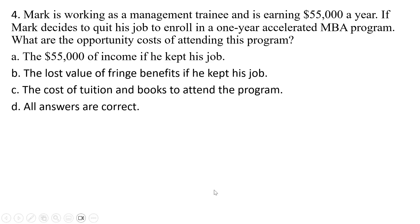The correct answer here is D — all of these answers are correct. By attending this program, he'll give up the $55,000 of income, he'll give up the lost value of the fringe benefits he received as a management trainee, and we need to include the cost of tuition and books of attending the program. Answer D.